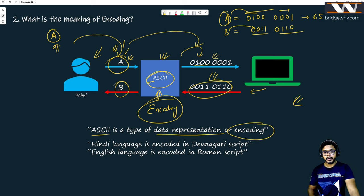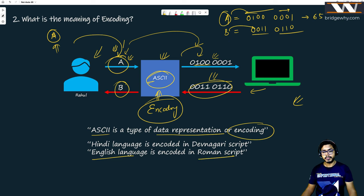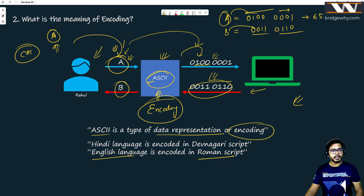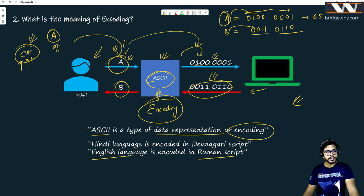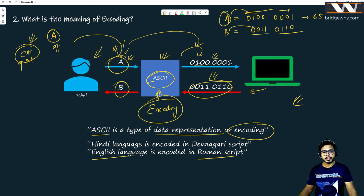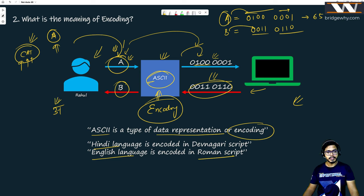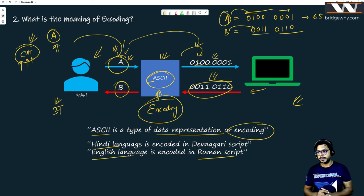By now you should understand the meaning of encoding. If I say English language is encoded in Roman script, you would agree — whatever I write, I use symbols to represent the word 'cat' using Roman script. The entire English language is encoded in Roman script. Similarly, Hindi language has its own script — Devanagari. So by now you all should understand the meaning of encoding.